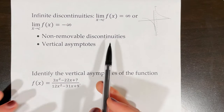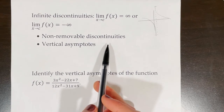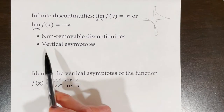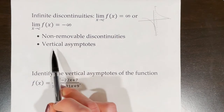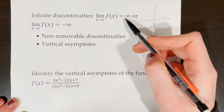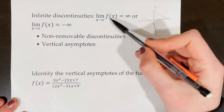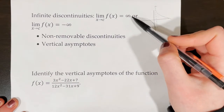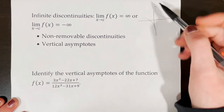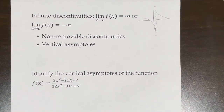If you're not sure what a non-removable discontinuity is, be sure to check out my video on types of discontinuities. Infinite discontinuities are also known as vertical asymptotes, because when the limit approaches infinity or negative infinity, we have a vertical asymptote at that value.